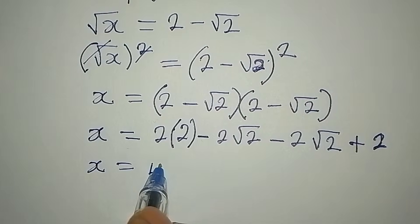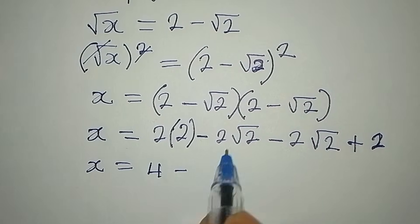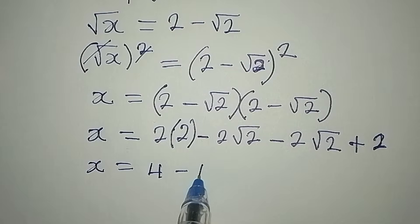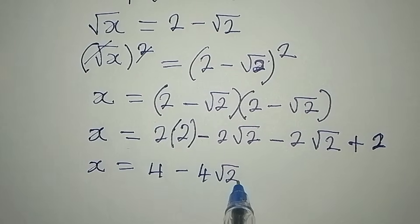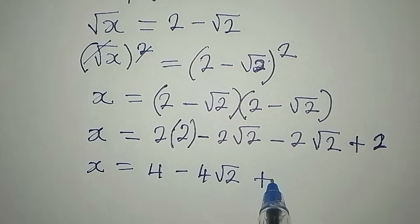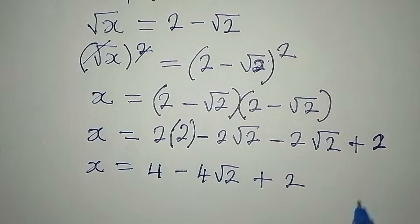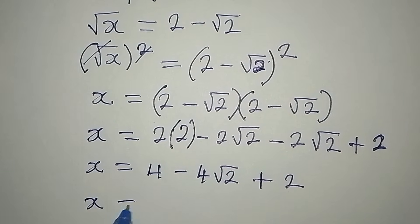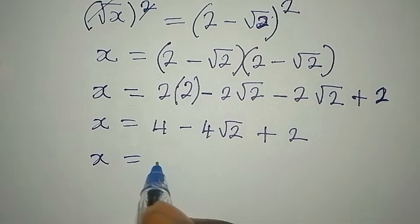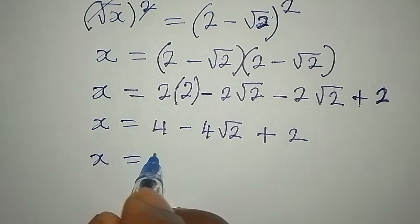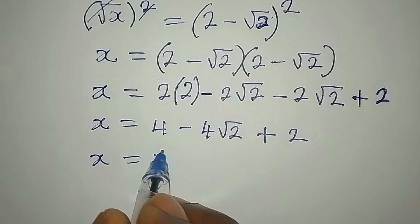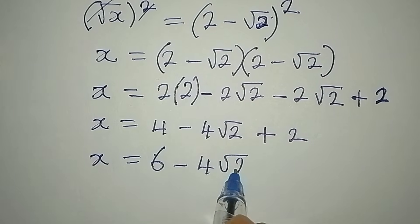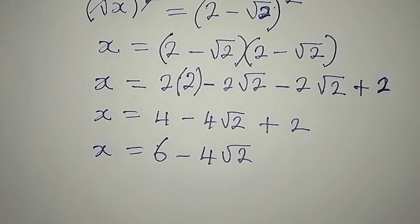So x is equal to: 2 times 2 is 4, then minus 2 root 2 minus 2 root 2 will give us minus 4 root 2, then we have plus 2. Now we can add these together, so we have x equal to 4 plus 2, which is 6, minus 4 root 2.